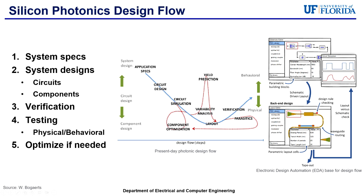Moving on to silicon photonics design flow. As shown in the middle figure, ideally the design flow starts with a system specification and designs on a progressively detailed level down to the physical layout. Then on is verification and testing, where one moves again to the behavioral level. However, it is often needed to switch from a physical to behavioral level and back in mid-flow, or even move back to an earlier stage to perform additional component optimization. The figure on the right showcases a photonic design flow based on an existing electronic design automation, also known as EDA, program. The top window is the front end, which focuses on the schematics, while the bottom window shows the back end design, which focuses on the layout of the silicon photonics design itself.